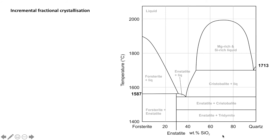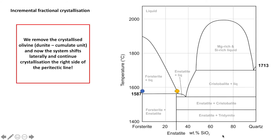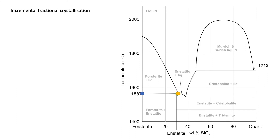Now we look at an example of incremental fractional crystallization. Picture a system cooled to the liquidus, where we crystallize forsterite and the system evolves through a continuous reaction to a certain point. At that point we remove all the crystallized forsterite — perhaps forming a dunite or a cumulate rock — and the system shifts to the right side of the peritectic line. We hit the peritectic point, all remaining forsterite is consumed in the discontinuous reaction, then we hit the eutectic, ending with the same result as the second equilibrium crystallization example.